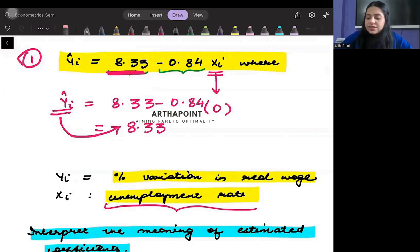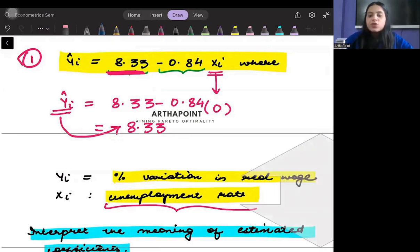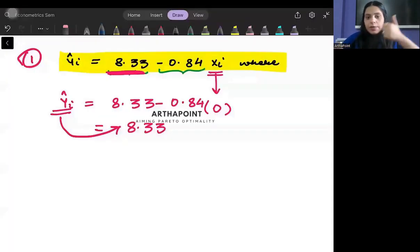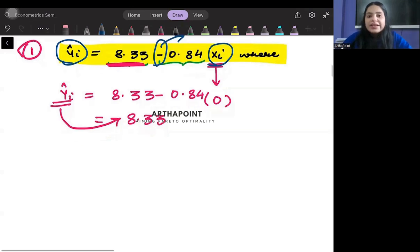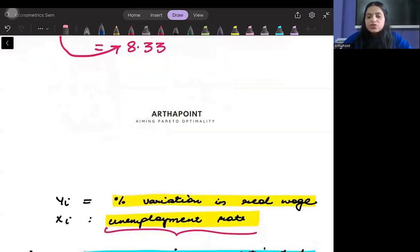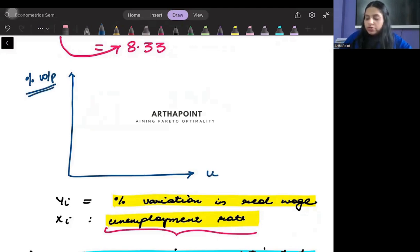Also notice that there is a negative sign between the real wage and xi. This negative sign means that there is an inverse relation between real wage and unemployment rate, and clearly isn't that the definition of the Phillips curve. If I take percentage change in the real wage here and unemployment rate here, then I know that there is an inverse relationship between the two.